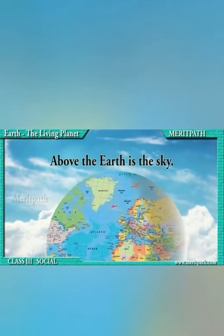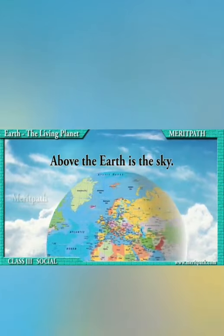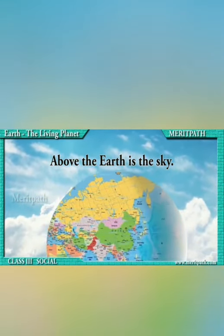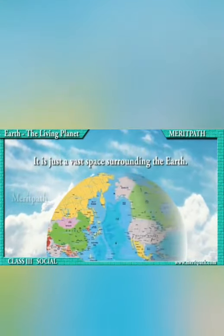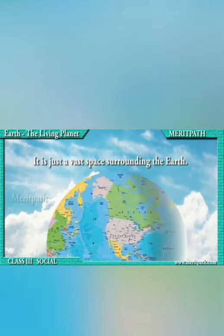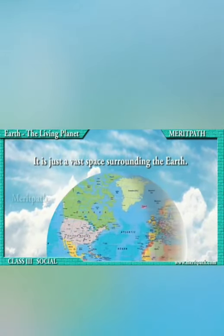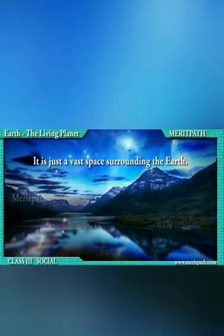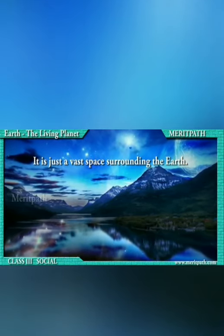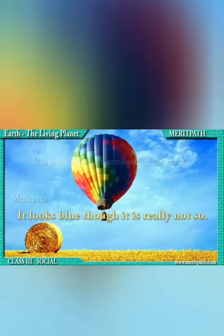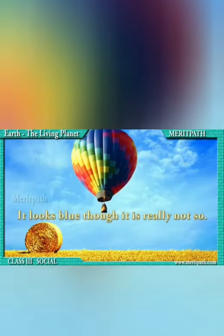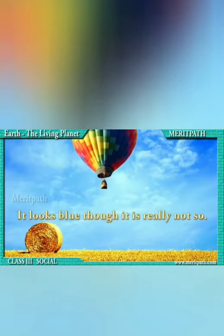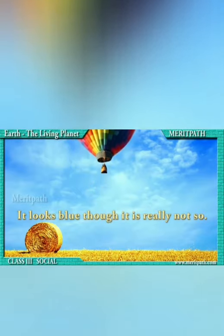The upper atmosphere which can be seen from the earth's surface is the sky. It is everything that lies above the surface of the earth, including the atmosphere and the outer space. The sky seems to be blue in color, but that is not the actual color of the sky.